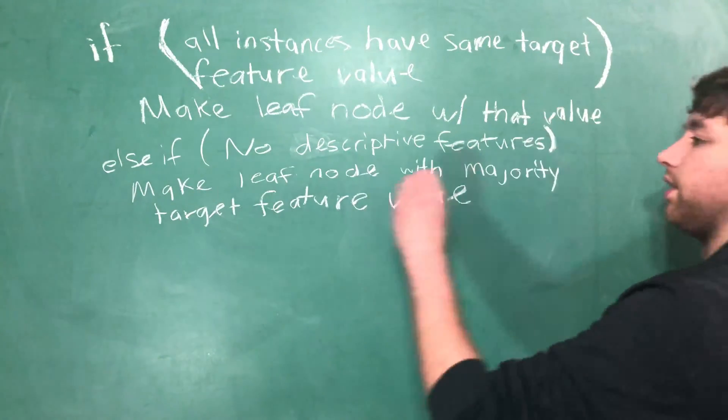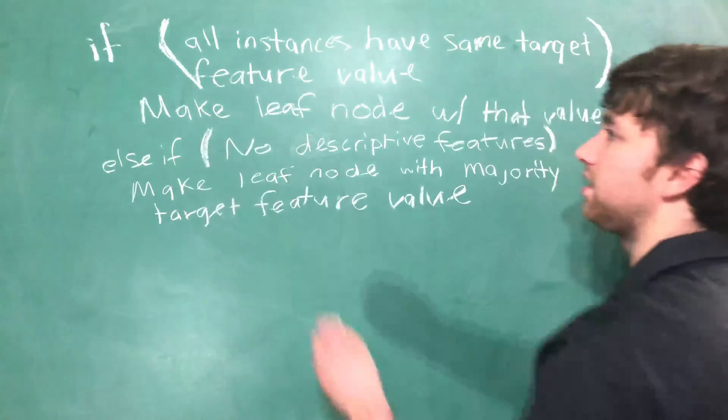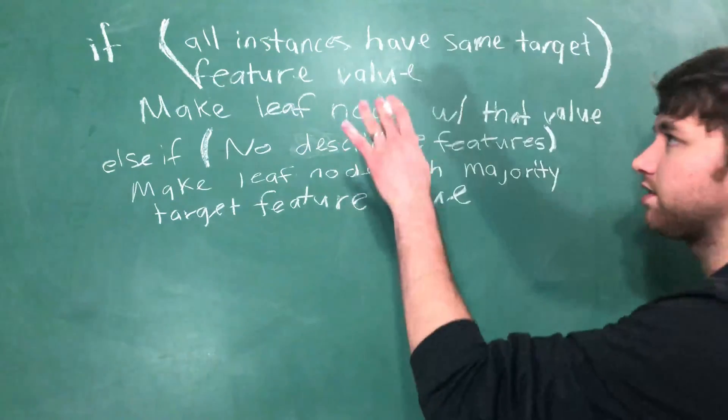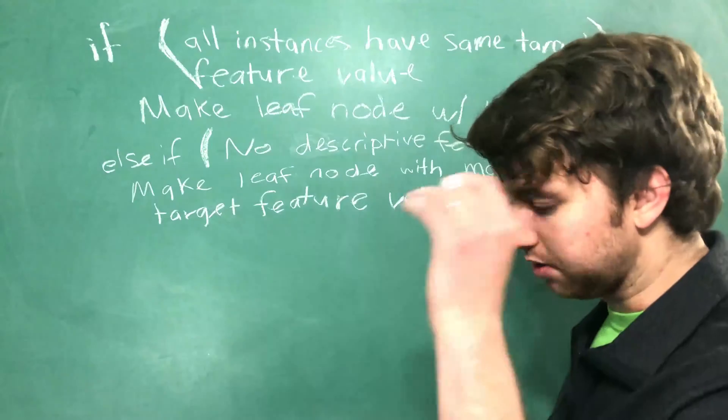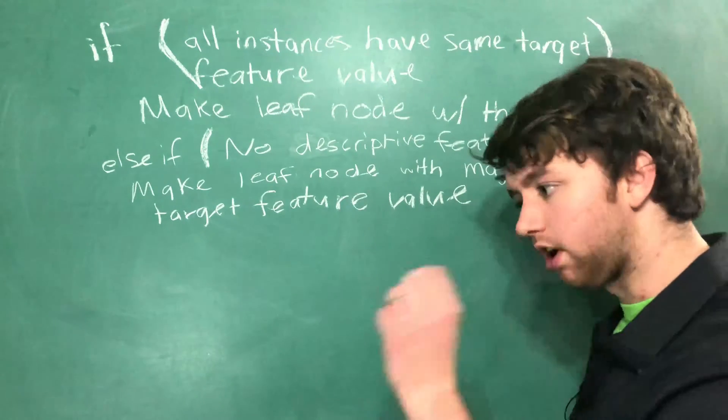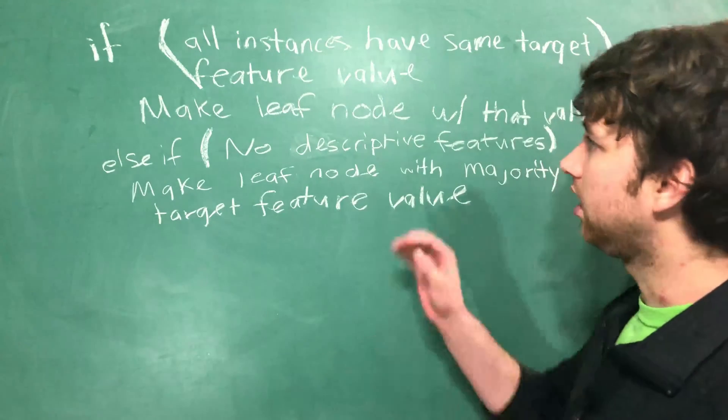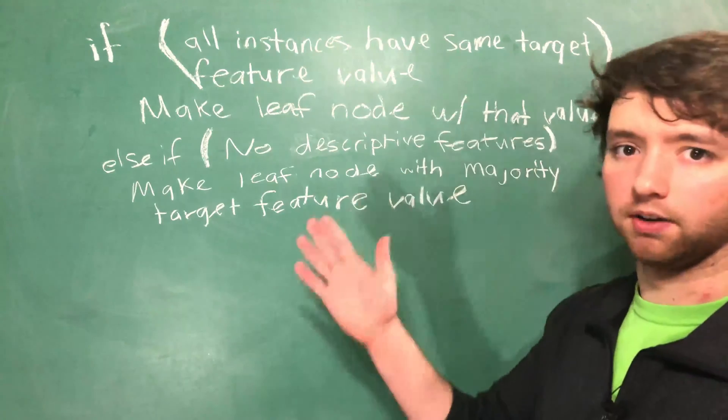So hopefully this is nice and clear for you guys. Really simple. If all the instances have the same target feature value, they all have diabetes or they all do not have diabetes, we're going to make the leaf node with that value whatever it may be.